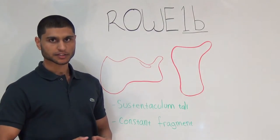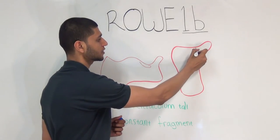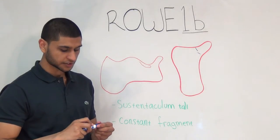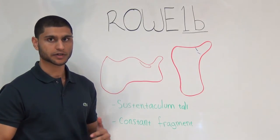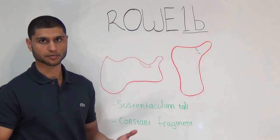Rowe 1b is a separation of the sustentaculum tali from the calcaneus. The foot is inverted during the time of injury. An isolated Rowe 1b is not very common because the subtalar joint will be either depressed, or injured, or both.